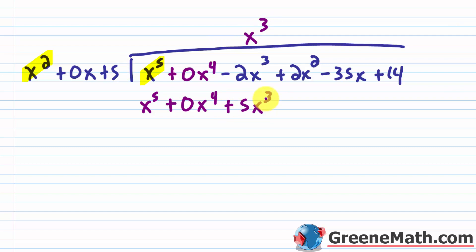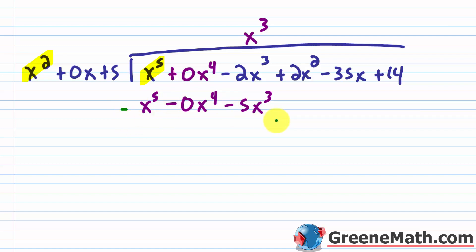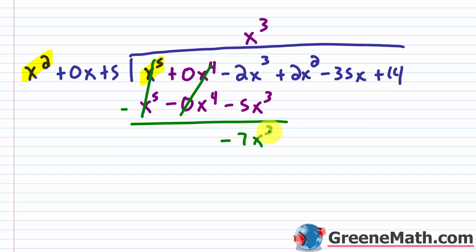Now we do the subtraction. You're subtracting this entire polynomial away. I like to distribute the negative in and then just add — so change the sign of everything. The x to the fifth terms cancel, the 0x to the fourth terms cancel. What's left is negative 2x cubed minus 5x cubed, which is negative 7x cubed. Now I bring down plus 2x squared.